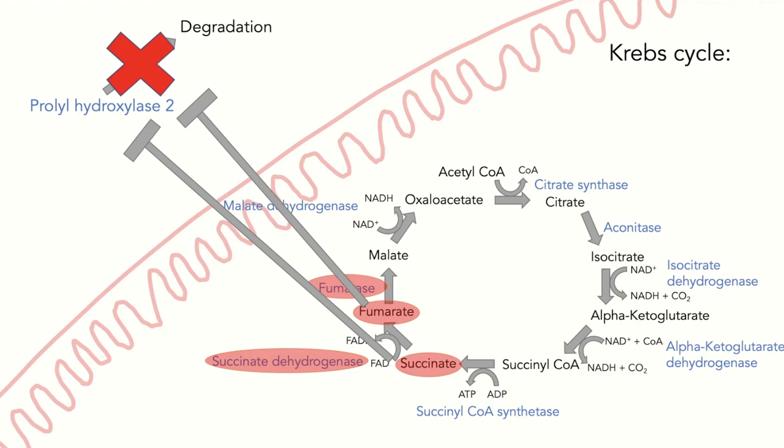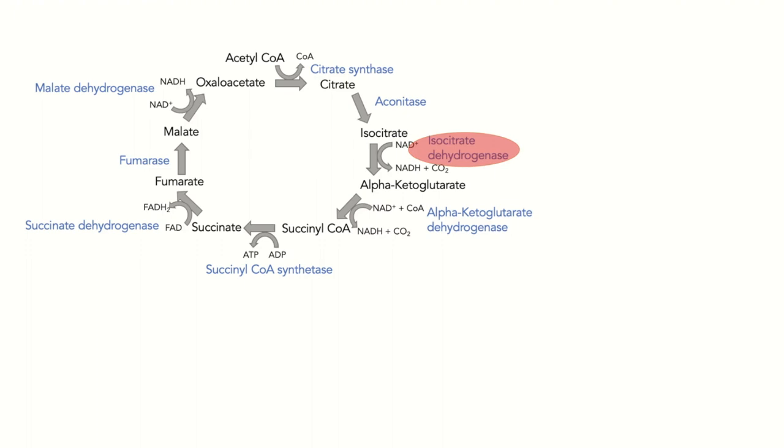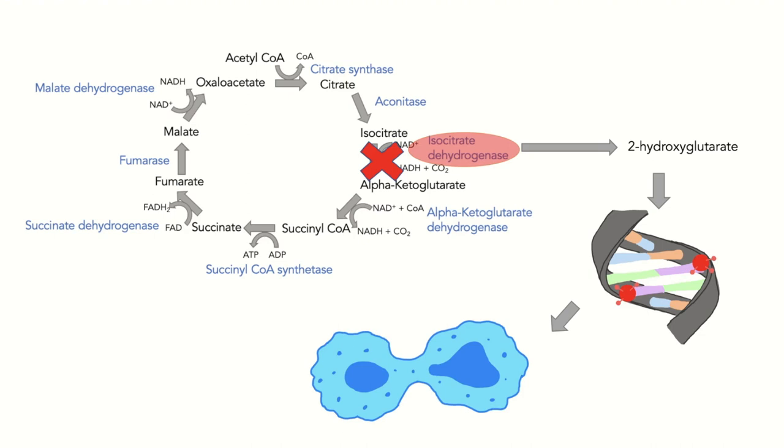Another enzyme of the Krebs cycle that is important in cancer cells is the isocitrate dehydrogenase, a mutant form of which results in the production of the oncogenic metabolite 2-hydroxyglutarate instead of alpha ketoglutarate. The 2-hydroxyglutarate can then alter the methylation patterns in DNA, thereby reducing the dependence of growth factors for cell proliferation, promoting unrestrained cell growth and division.